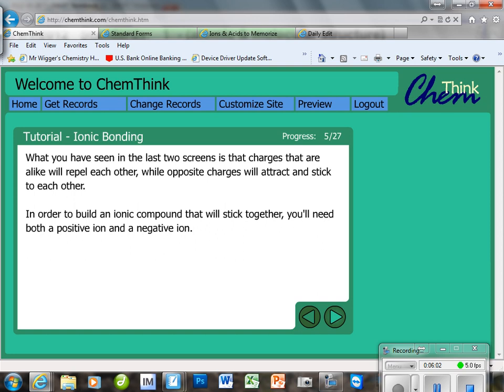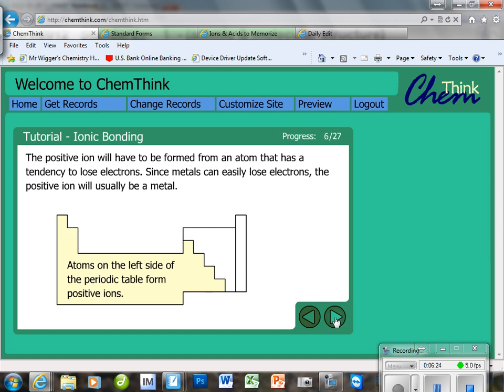So, let's look and see what we've learned so far. This is the tutorial, by the way, for your assignment that's due next Tuesday. I would recommend getting to it tonight. What you have seen in the last two scenes is that charges that are alike will repel each other, while opposite charges will attract and stick to each other. In order to build an ionic compound that will stick, you'll need both a positive and negative ion. So, we know that. What is this one all about? Anyone want to venture a guess on this?